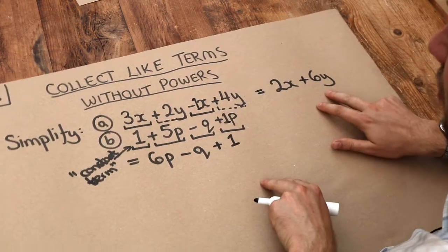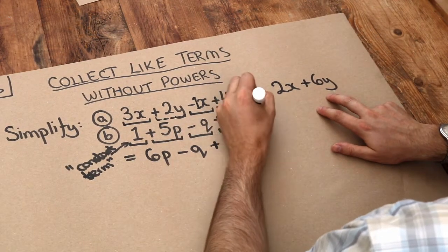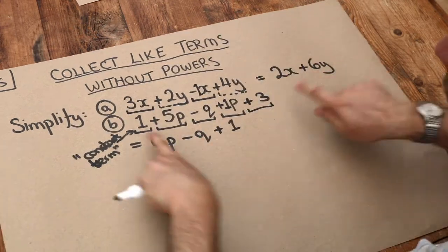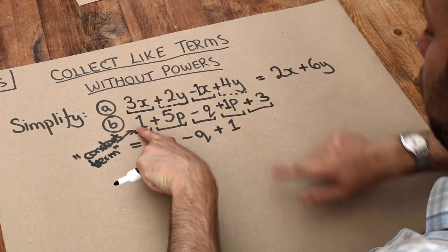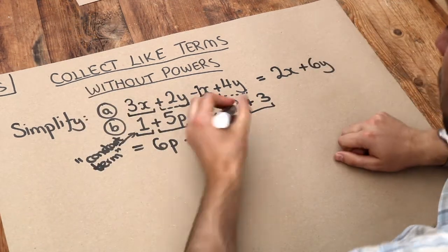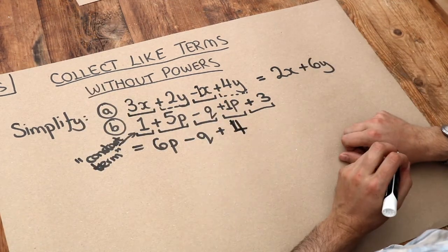If we had something else on the end, let's just say we had plus 3 on the end, then we have another constant term and we can collect these together. So we'd have the 1 plus the 3 and that would just be 4 on the end instead of 1.